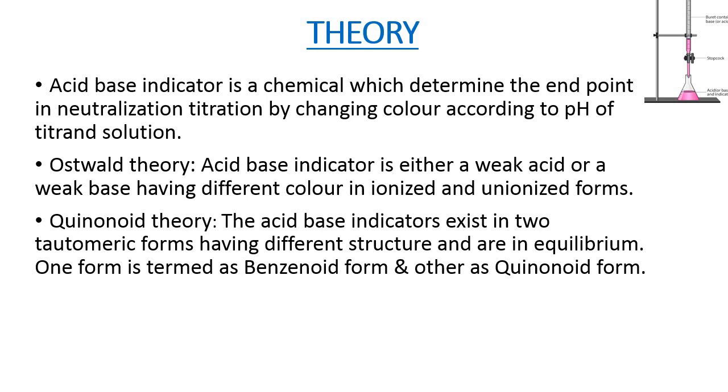Color change is due to the interconversion of one tautomeric form to the other. One form mainly exists in the acidic medium and the other in the alkaline medium. For example, methyl orange. Methyl orange has quinoid form in acidic solution and benzenoid form in alkaline solution. The color of the benzenoid form is yellow while that of the quinoid form is red.